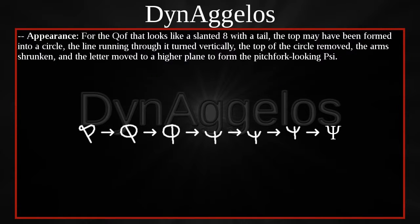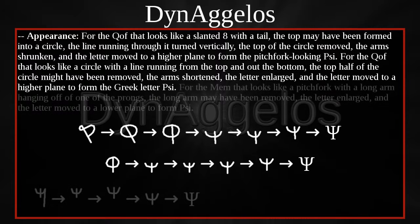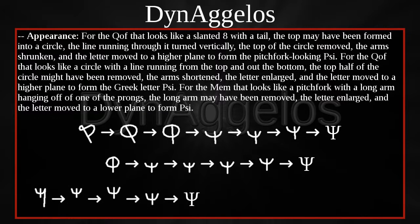For the KOF that looks like a slanted eight with a tail, the top may have been formed into a circle, the line running through it turned vertically, the top of the circle removed, the arm shrunken, and the letter moved to a higher plane to form the pitchfork-looking PSI. For the KOF that looks like a circle with a line running from the top and out the bottom, the top half of the circle might have been removed, the arm shortened, the letter enlarged, and moved to a higher plane to form PSI. For the MAME that looks like a pitchfork with a long arm hanging off of one of the prongs, the long arm may have been removed, the letter enlarged, and moved to a lower plane to form PSI. Another possibility is that PSI is a modified COPA.